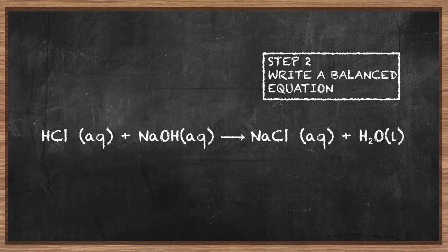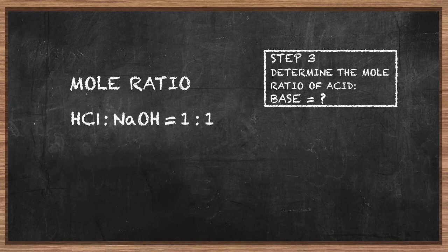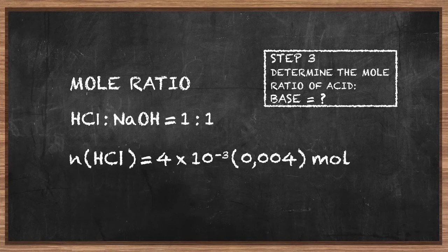Step 2: write the balanced equation. Hydrochloric acid reacts with sodium hydroxide to form sodium chloride and water. Check that the equation is balanced — yes, everything is balanced. This is the correct equation. Step 3: the mole ratio of acid to base is 1 mole of acid for every 1 mole of base. 4 × 10⁻³ moles of sodium hydroxide react completely with the same number of moles of hydrochloric acid.